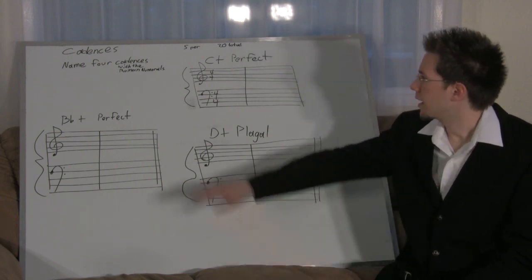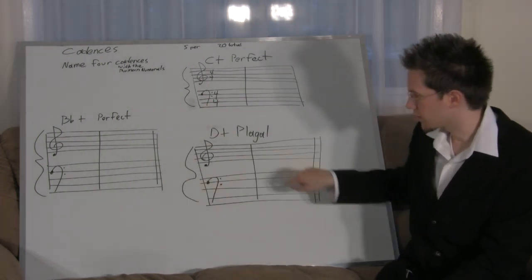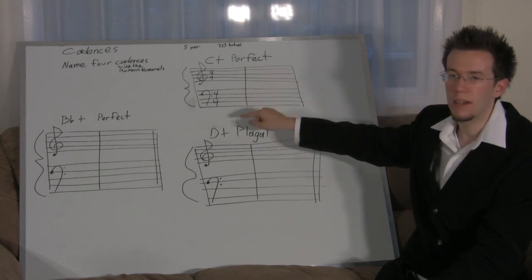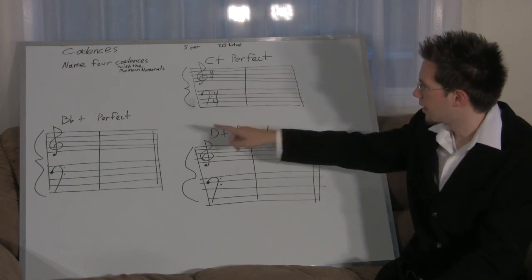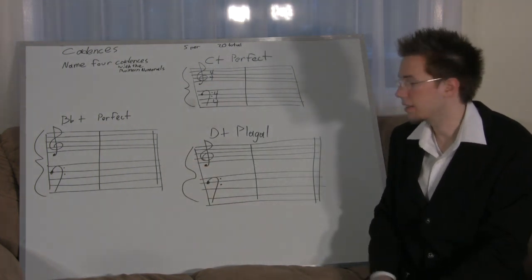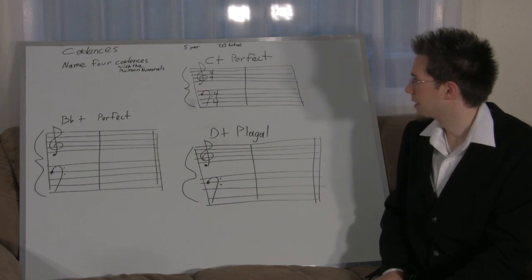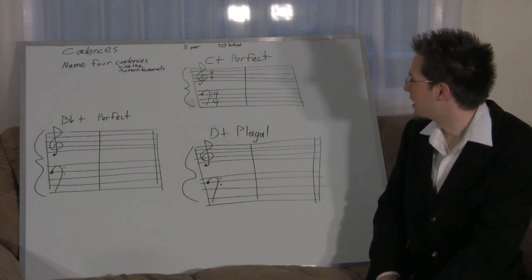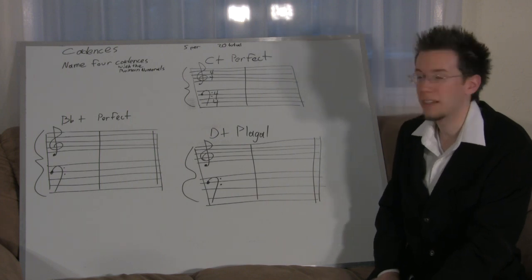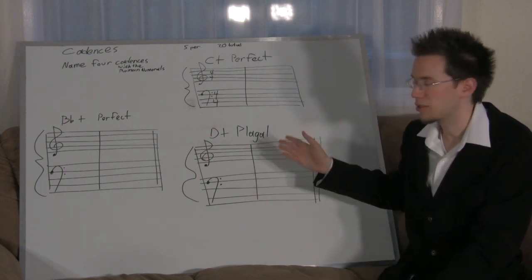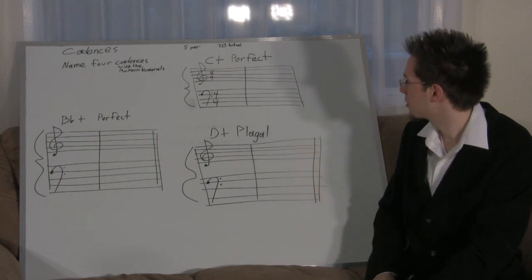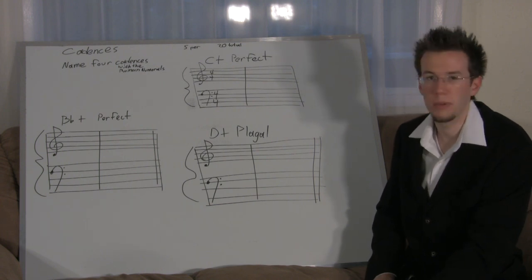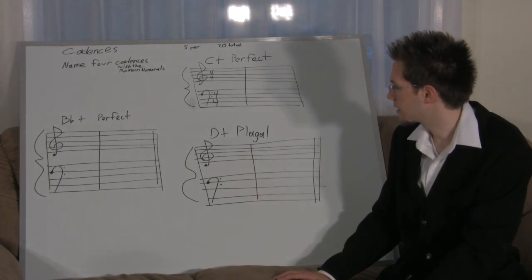Each section here is worth five marks. The first one: do a perfect cadence in C major. Here: B flat major perfect cadence. And here: D major plagal cadence — that should make it a bit easier since I already told you the names of two of them. Construct your cadences, remember what pattern they go with, then write out your chord tones, make sure you write in your key signatures, and then you're done.